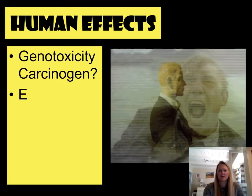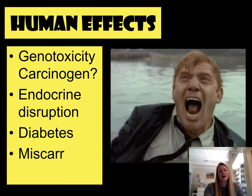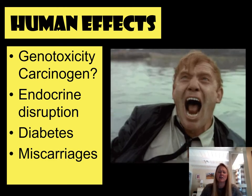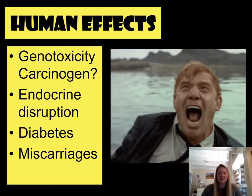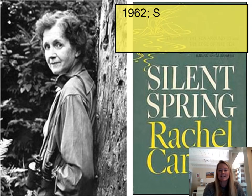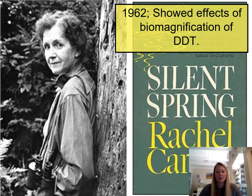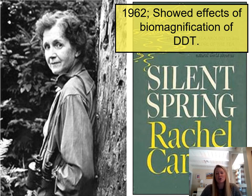So what does DDT do to the human body? It actually does a lot of things. First, it is carcinogenic — meaning it's cancer causing — and it has the ability to mutate our DNA and our genes. Second, it's an endocrine disruptor, a chemical that interferes with our ability to produce hormones or the delivery of those hormones throughout our body. It has also been linked to miscarriages. In 1962, a scientist named Rachel Carson was studying the effects of DDT on surrounding environments. She discovered the bioaccumulation of DDT in environments and published her results in a book called Silent Spring.